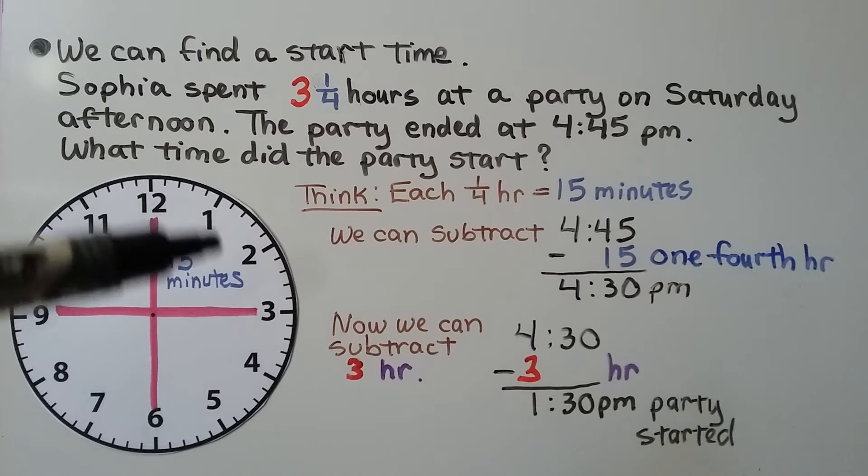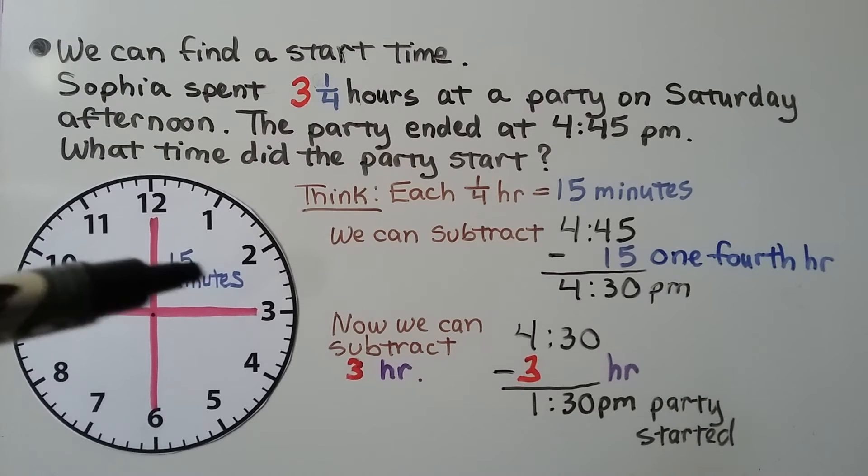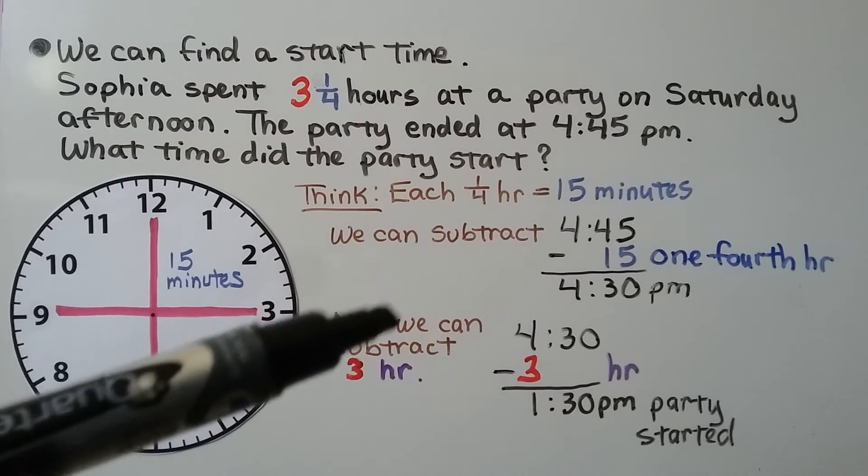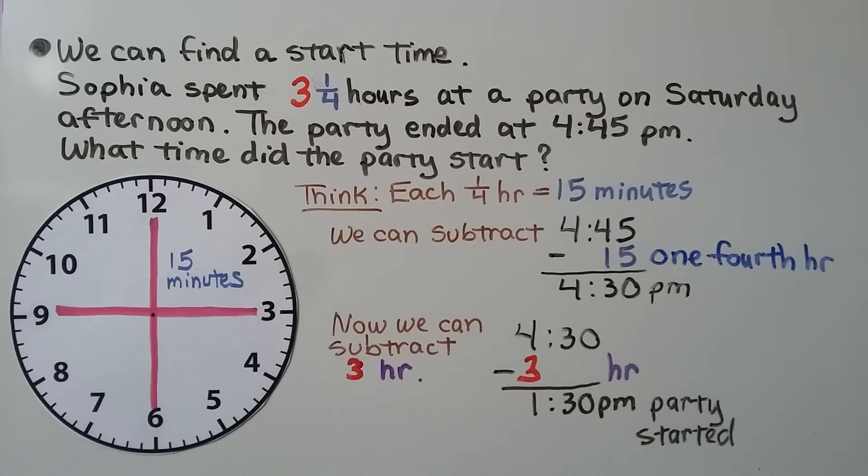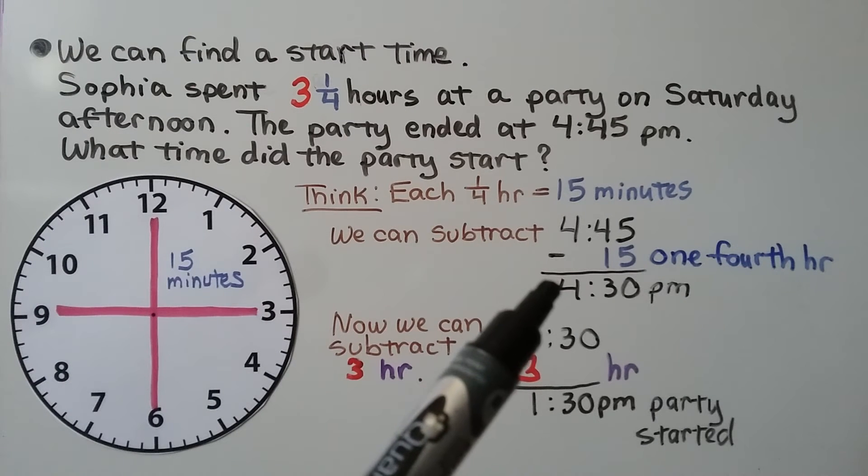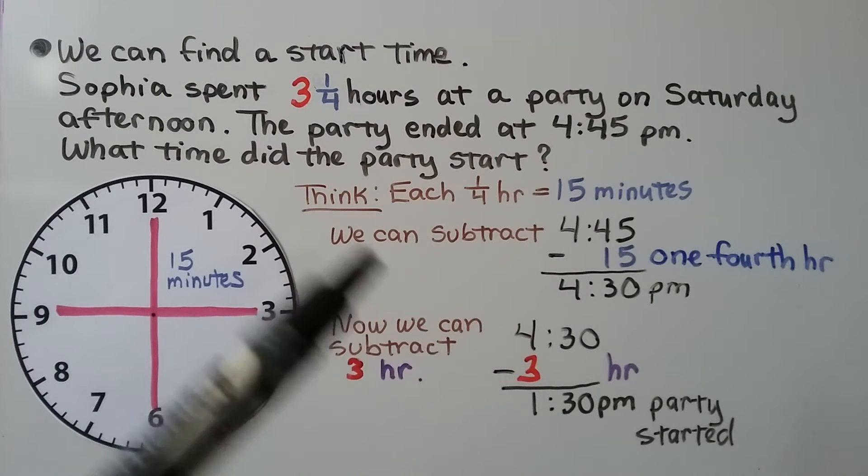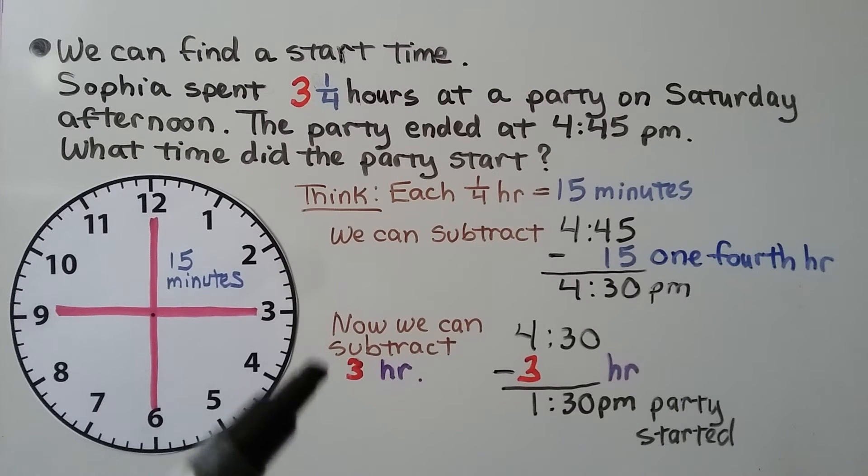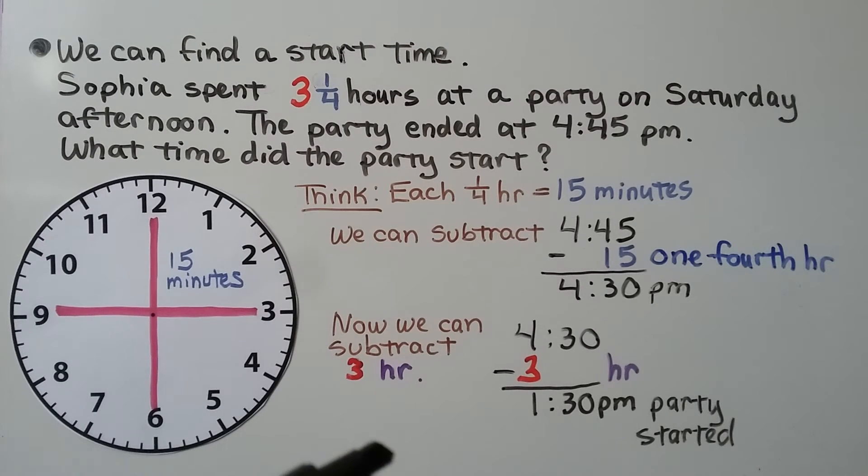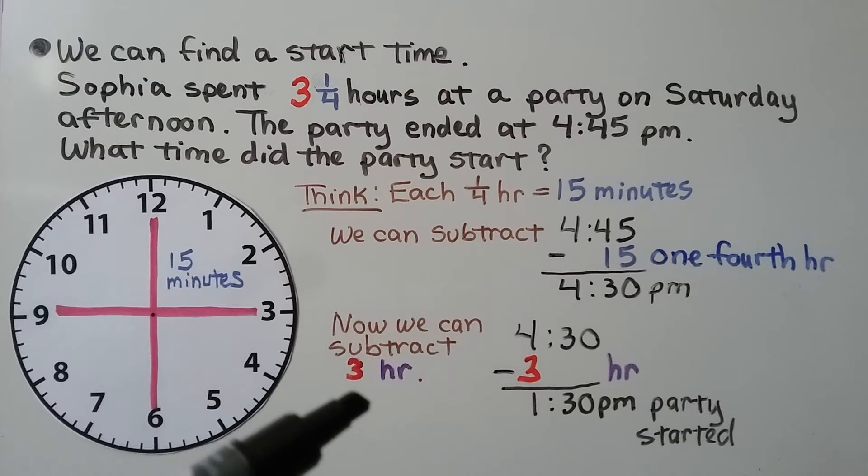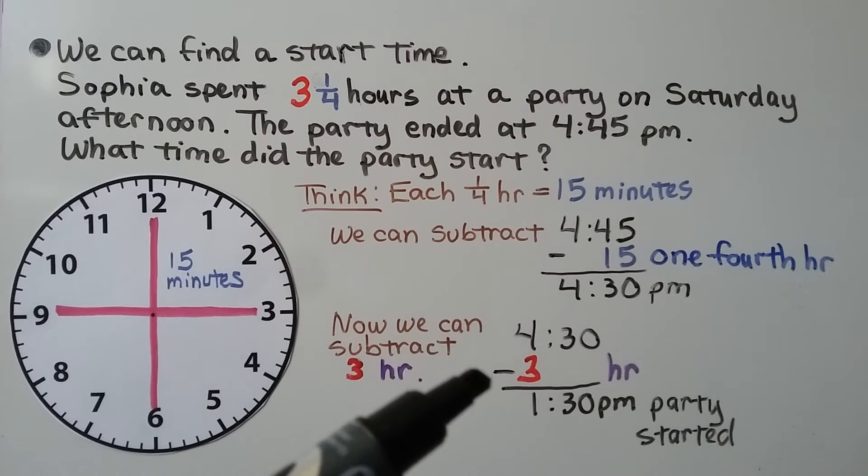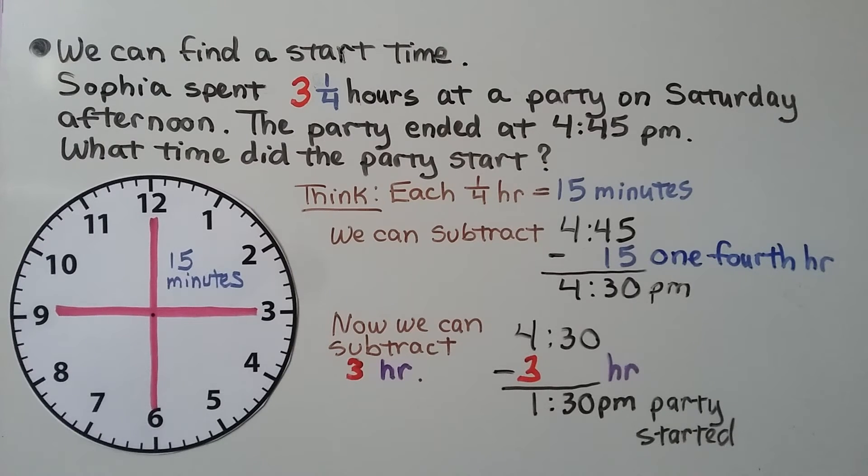So think, each one-fourth hour is 15 minutes. So we could subtract 15 minutes from 4:45 PM. That would bring us to 4:30 PM. Now we need to take away three hours, because we're trying to find the start time. So we need to go back in time. 4:30 minus 3 hours is 1:30 PM when the party started.